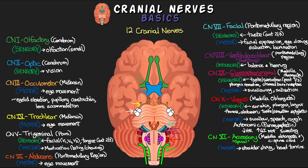The last cranial nerve is cranial nerve twelve, the hypoglossal, which originates in the medulla oblongata. The name again gives a clue: 'glossal' refers to the tongue, and 'hypo' means under. This is a motor nerve dealing with the muscles under the tongue, which are responsible for tongue movement.